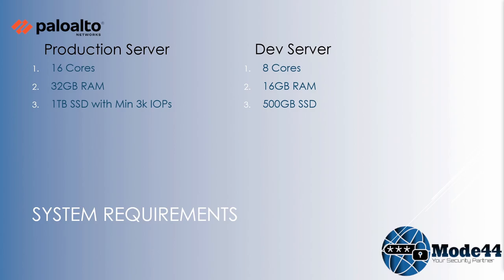For a production server, the minimum recommended specs are 16 cores, 32 GB of RAM, and one terabyte SSD with a minimum of 3000 IOPS. For a dev server, it's 16 cores, 16 GB of RAM, and 500 GB SSD. SSD is the recommended storage because of the nature of the database and the quick reads and writes — magnetic drives just struggle to keep up and performance will suffer.